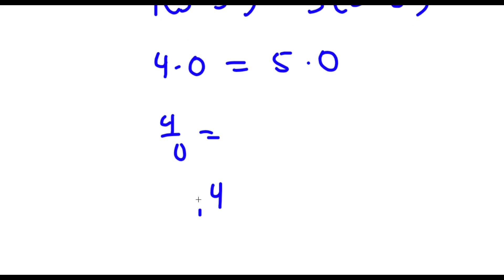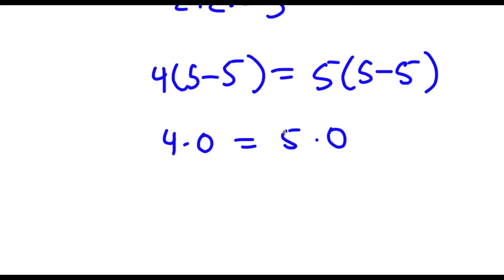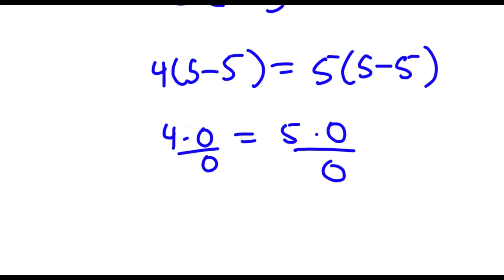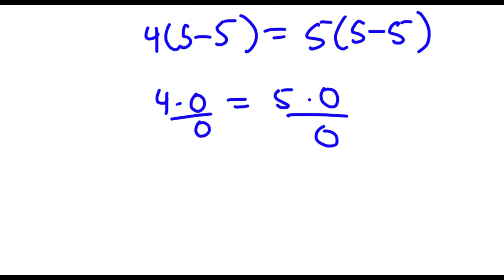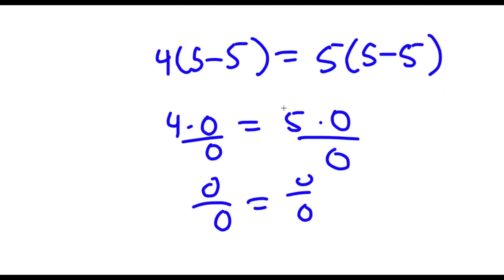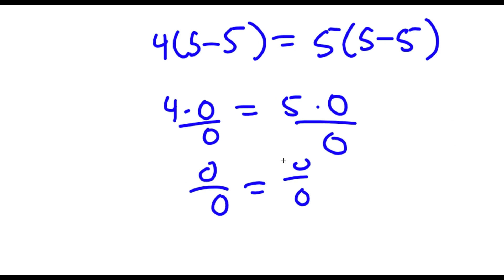Because anything divided by 0 — well, 4 divided by 0: 0 times what equals 4? Nothing. You can't multiply anything by 0 to get 4, because 0 times anything is 0. So dividing anything by 0 is undefined. When I divided both sides by (5 minus 5), I really divided both sides by 0. So 4 times 0 divided by 0 is 0 over 0, which is undefined. Dividing by 0 can lead to weird results like this.